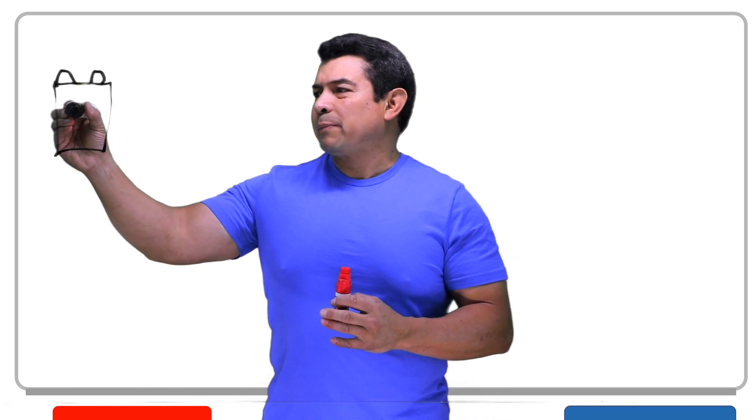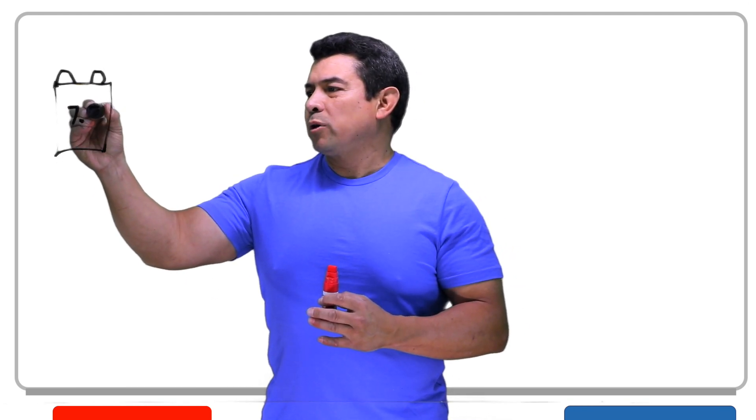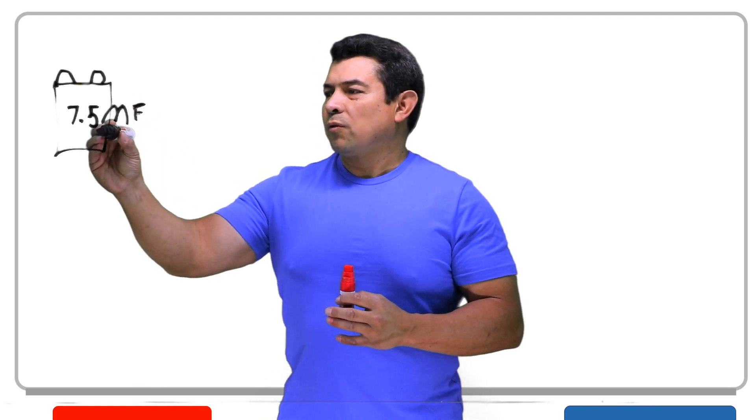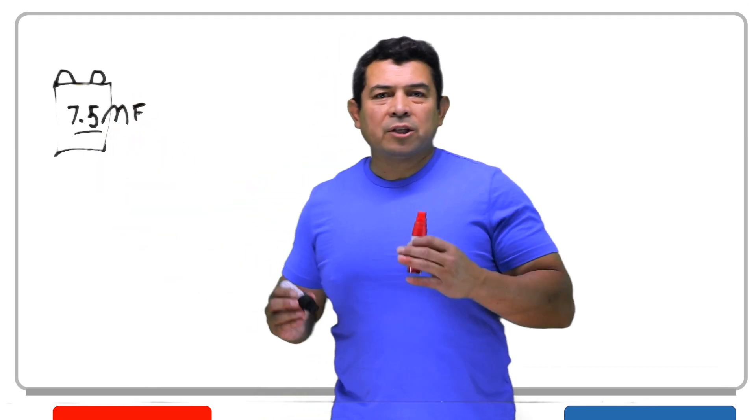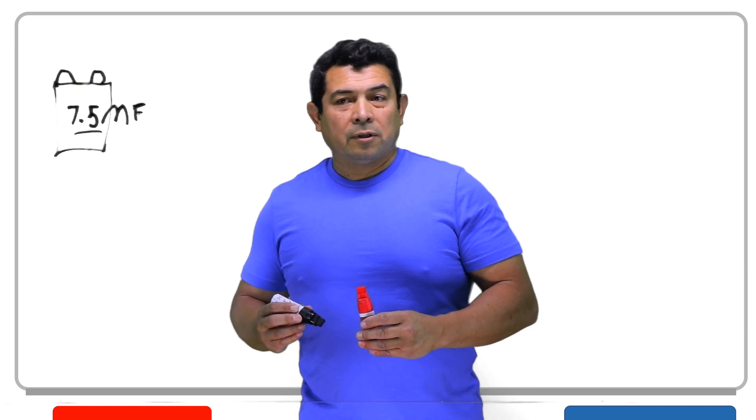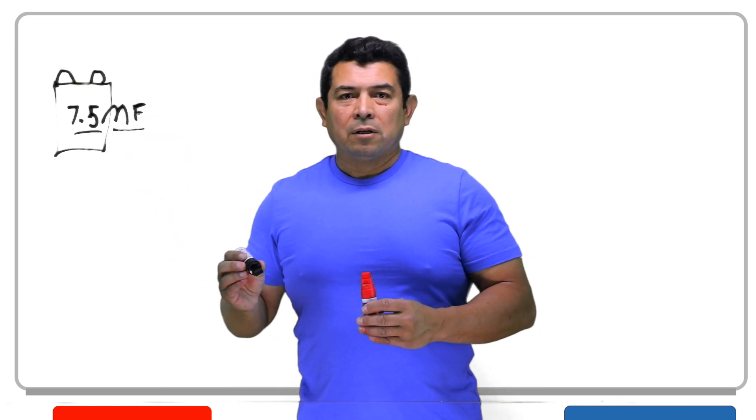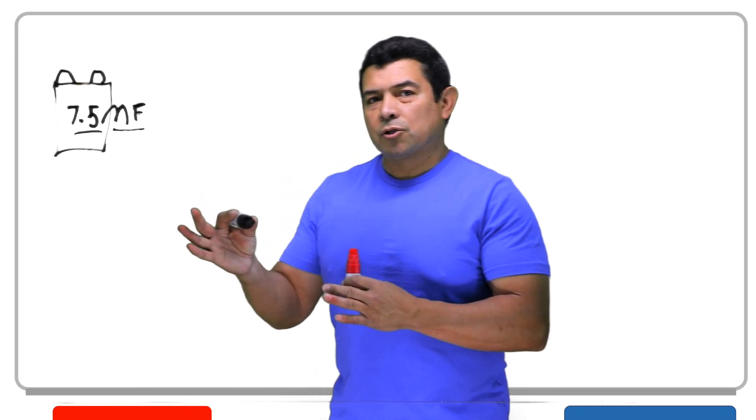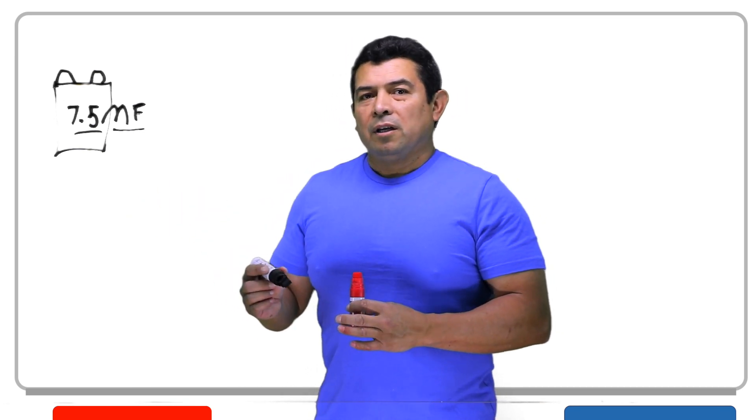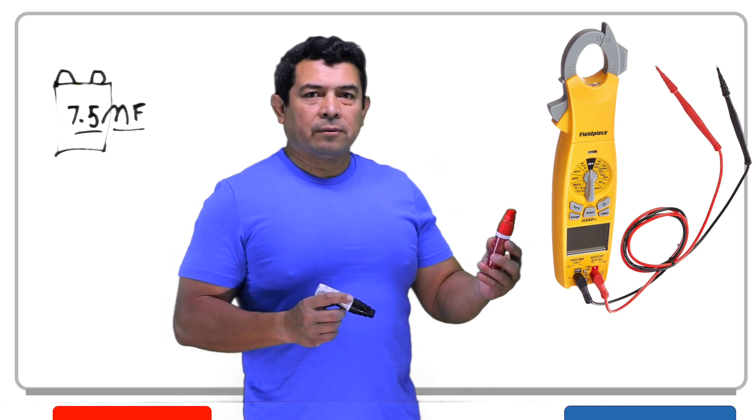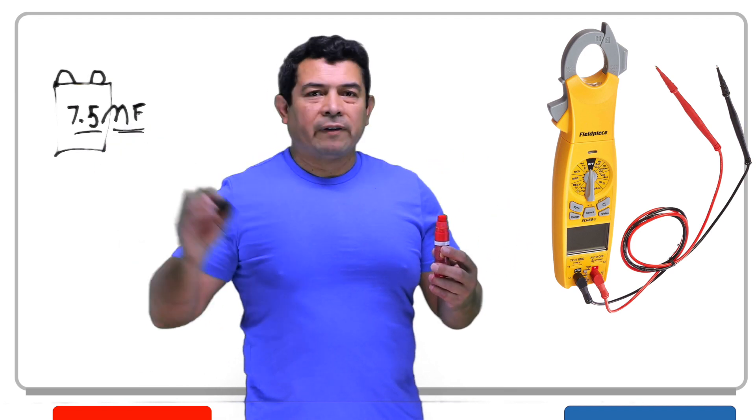Let's say, for example, that this happens to be a 7.5 microfarad capacitor. Well, the 7.5 tells you how much energy is going to store. And it's rated into microfarads. So to know if this is good or not, what you need is you're going to need a meter. And this meter is going to have to tell you what the microfarads are.